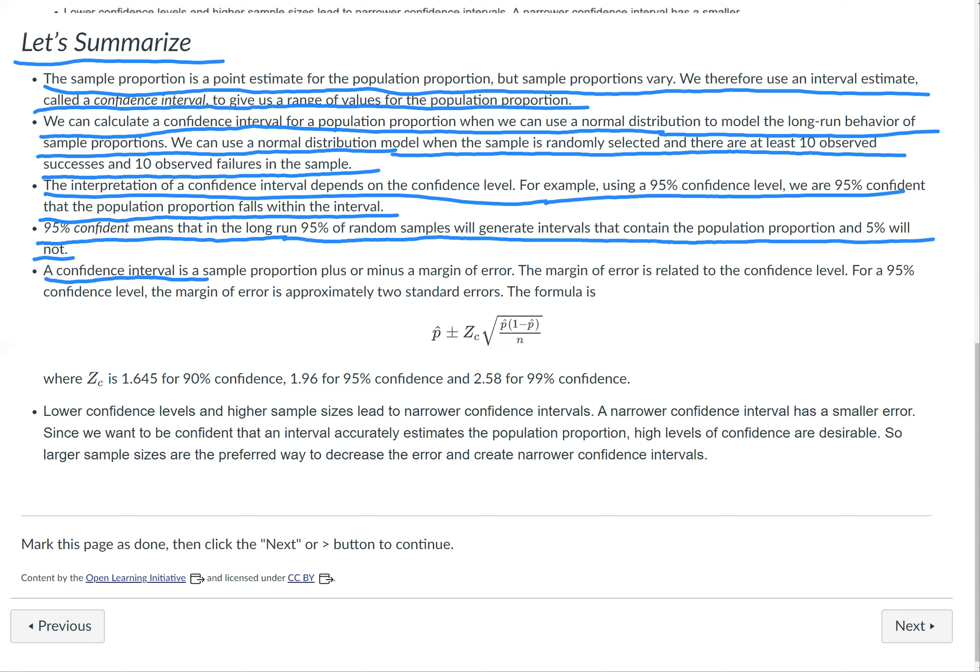A confidence interval is a sample proportion plus or minus a margin of error. The margin of error is related to the confidence level. For a 95% confidence level, the margin of error is approximately two standard errors. The formula is precisely this.